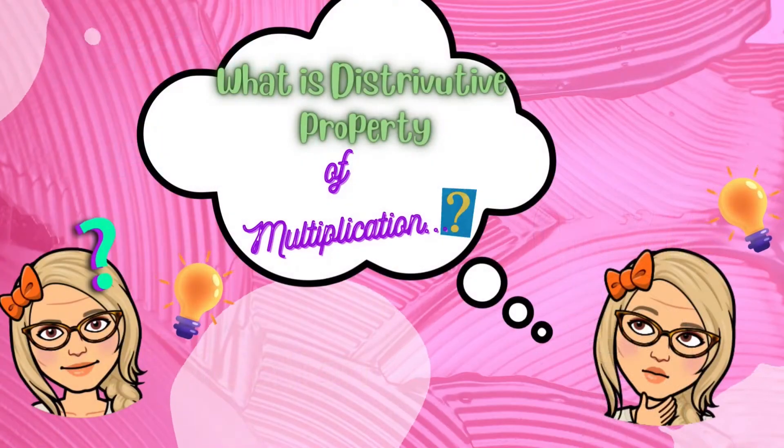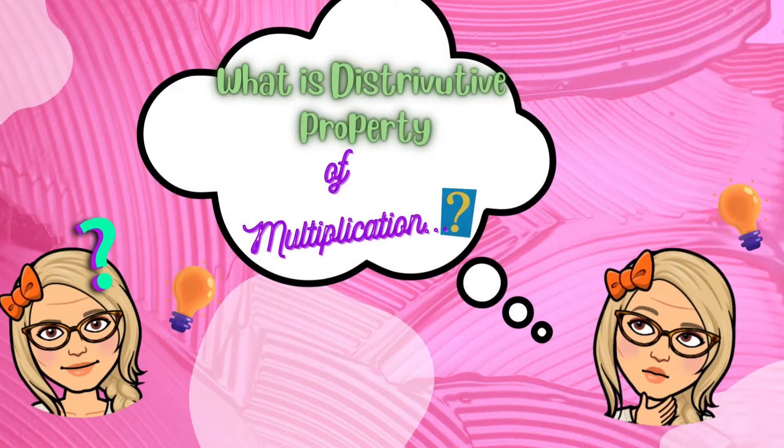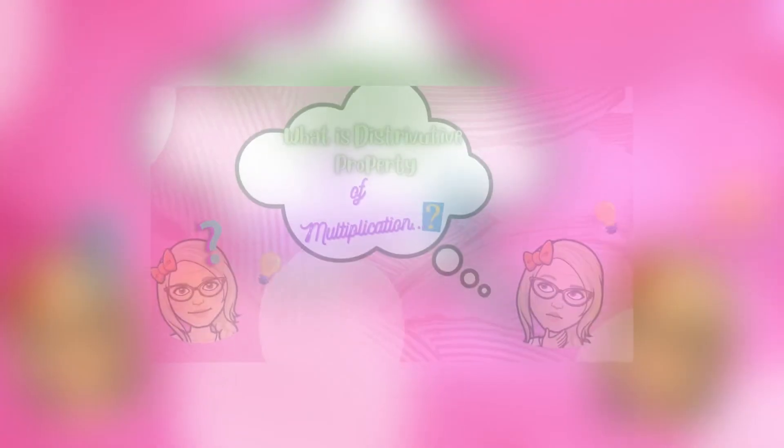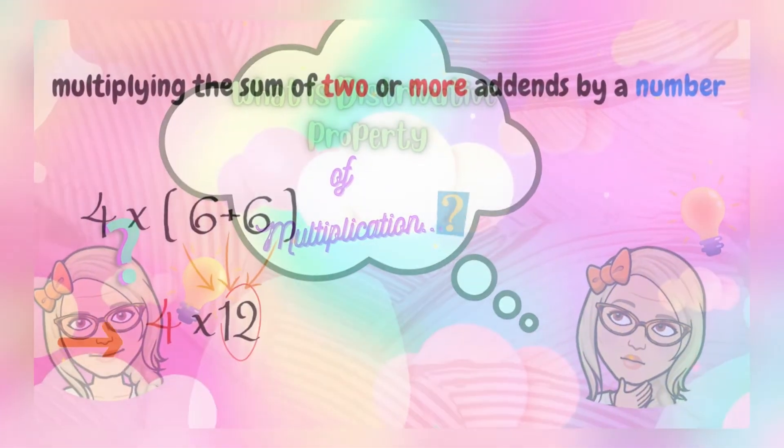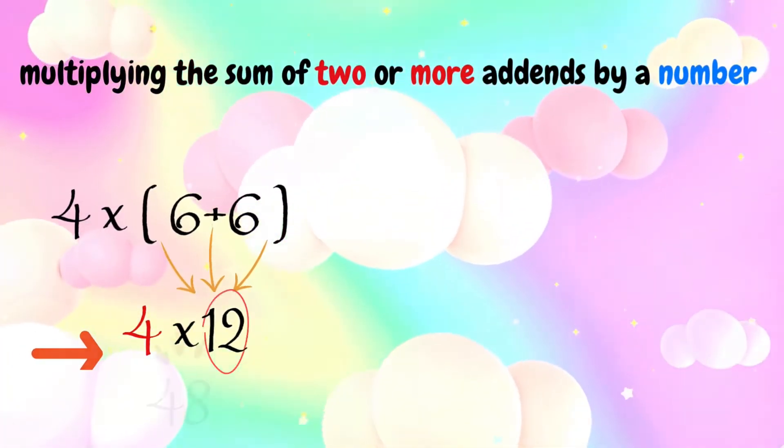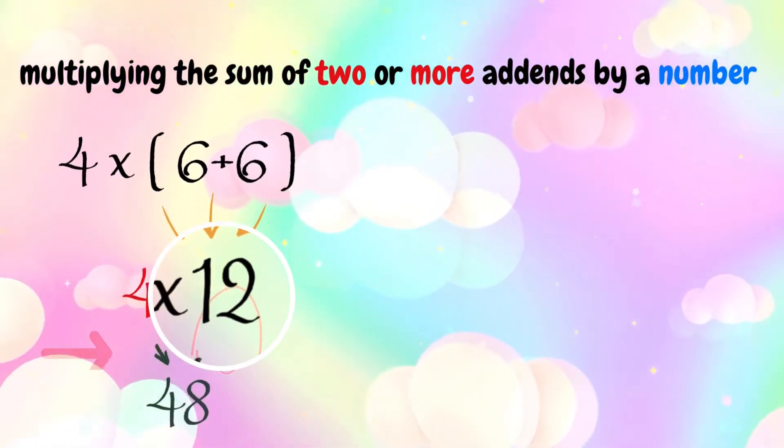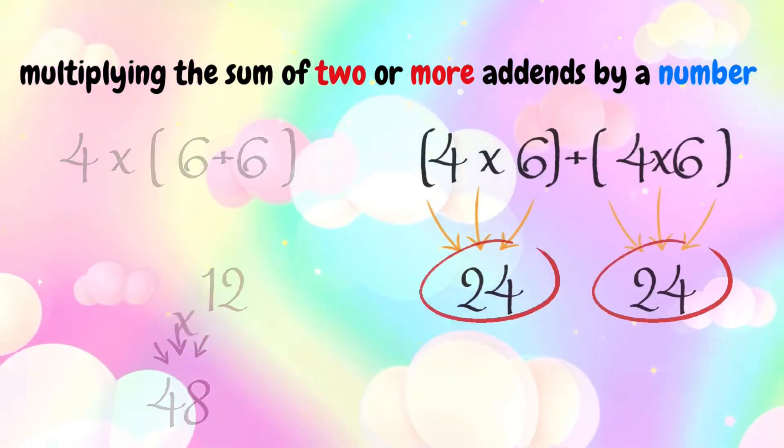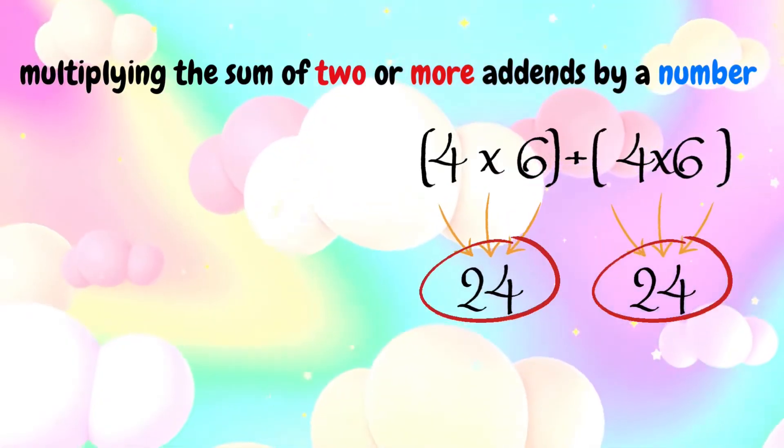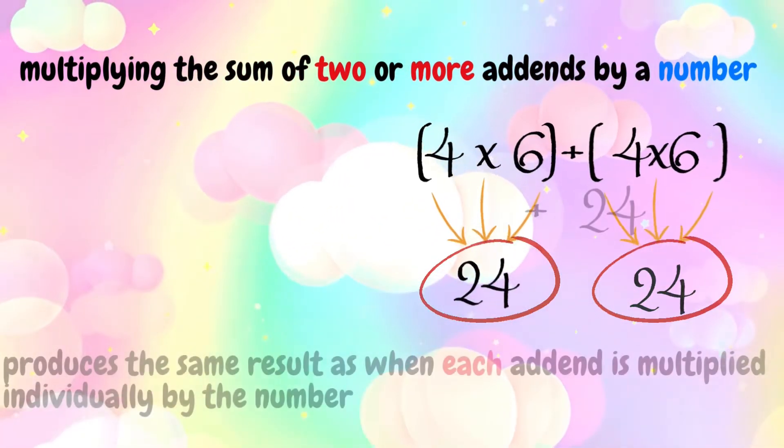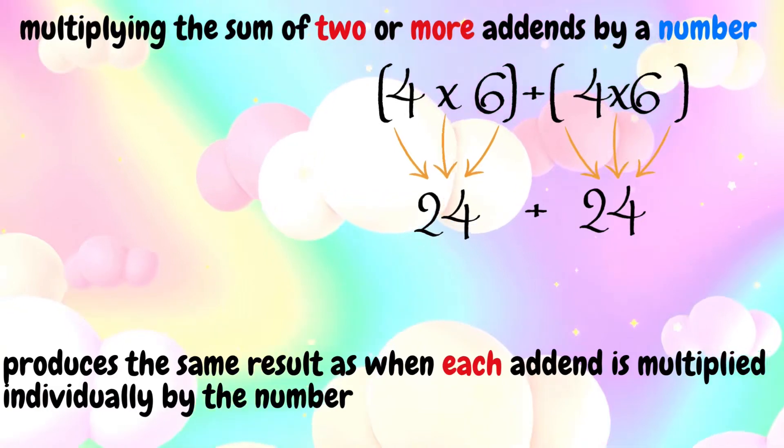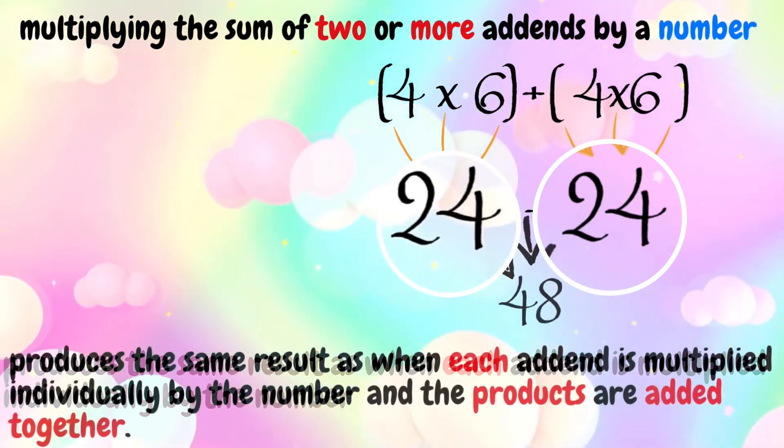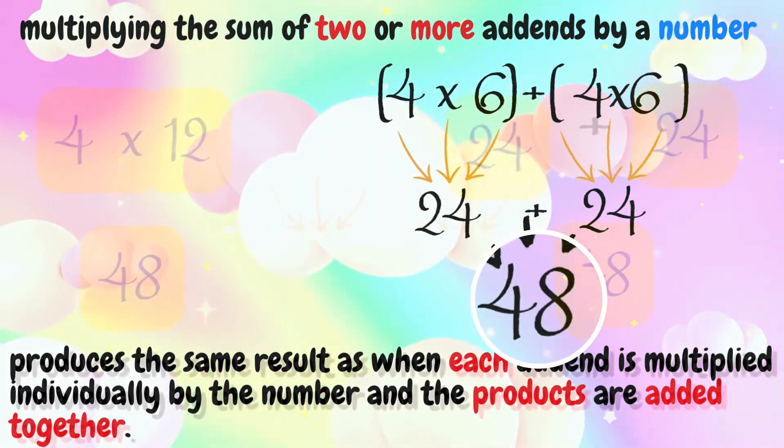And you may ask yourself what is the distributive property of multiplication? Let's see what is it about. Distributive property of multiplication states that multiplying the sum of two or more addends by a number produces the same result as when each addend is multiplied individually by the number and the products are added together.